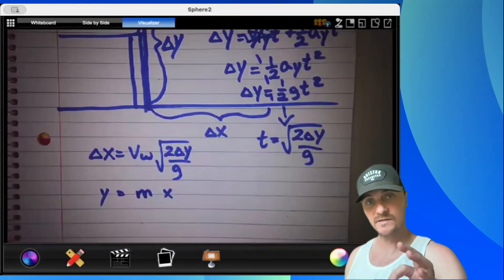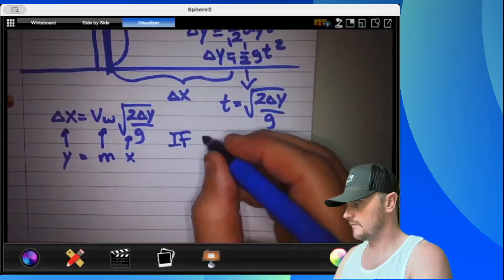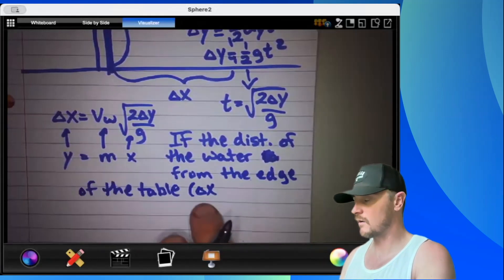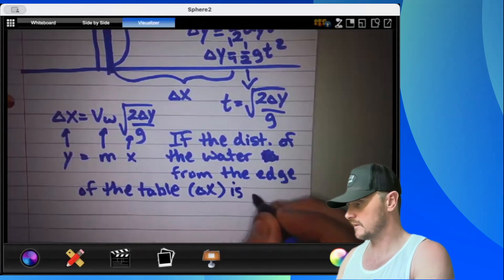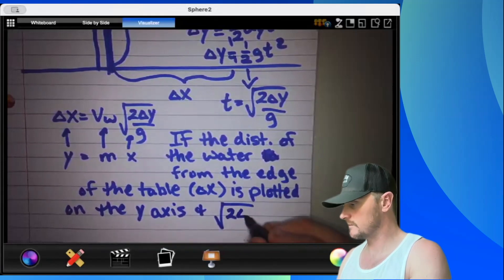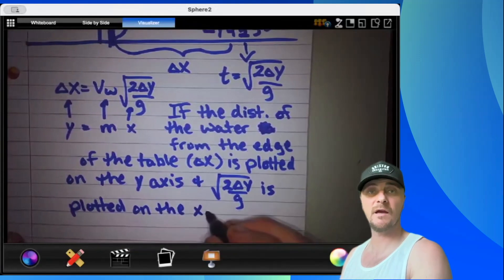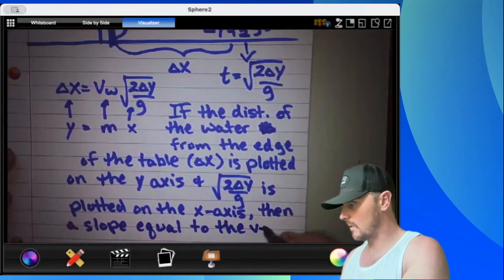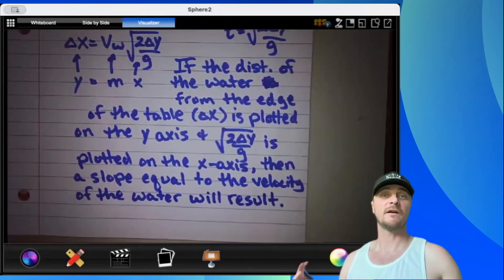If the distance of the water from the edge of the table, that's delta X, is plotted on the Y axis, and the square root of 2 delta Y over G is plotted on the X axis, then a slope equal to the velocity of the water will result. And that's part B. All done. Let's head over to part C.